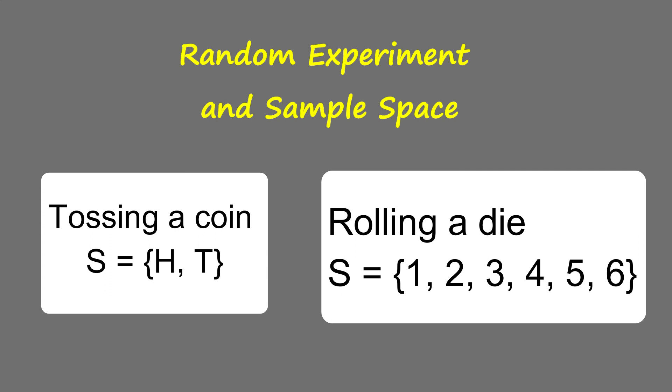The sample space for tossing a coin is H and T, while the sample space for rolling a die is 1, 2, 3, 4, 5, 6.